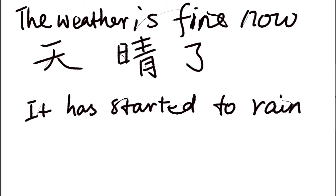天晴了 — 天 means the weather, 晴 means fine or sunny, and 了 is here to indicate the change. The new situation is 晴, which means sunny itself.